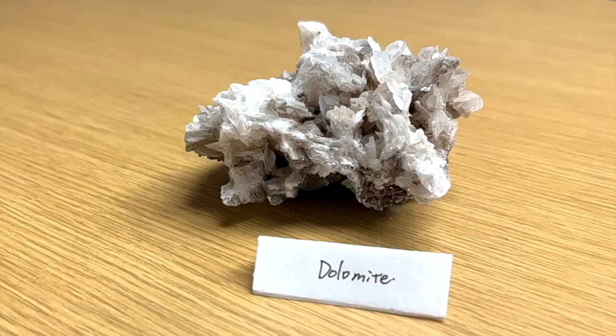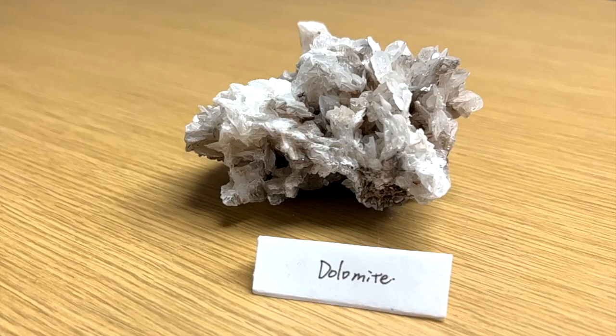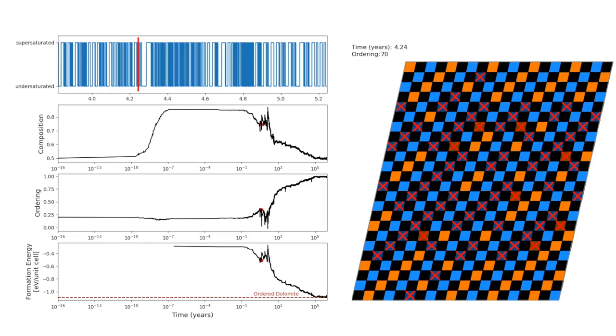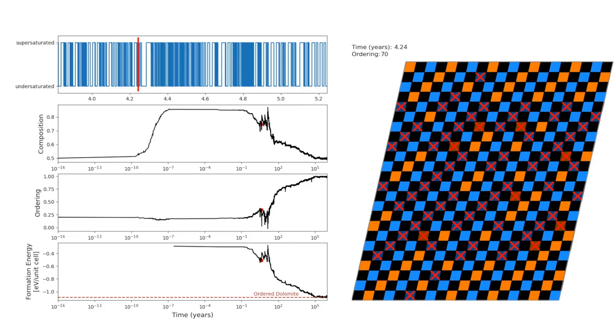My research interest is in crystallization and nucleation and growth of materials. The problem that I'm working on right now is the dolomite problem. Dolomite is a calcium and magnesium double carbonate mineral. It is a very common mineral on Earth, but it doesn't precipitate under seawater even if it's supersaturated. What we're trying to do is understand the thermodynamics of dolomite, predict the reaction of dolomite formation, explain why it's not forming under normal conditions, and predict conditions under which dolomite can form.